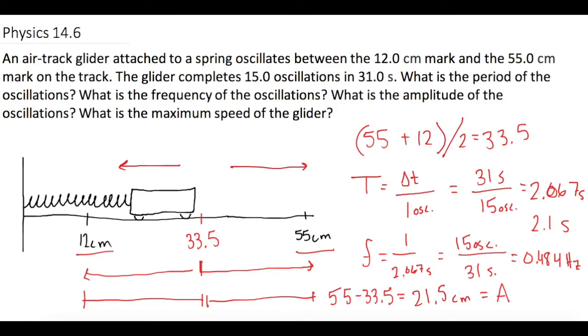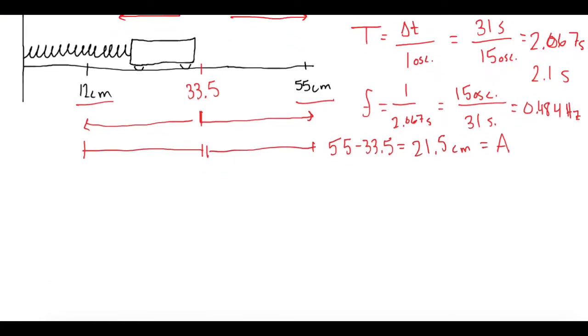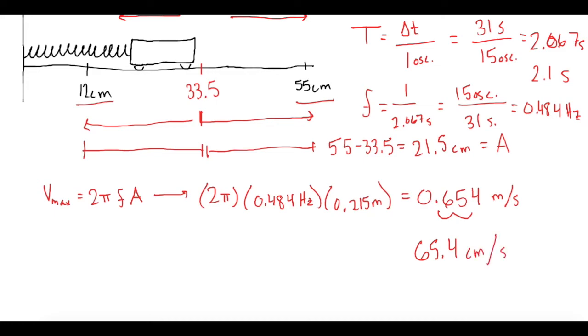Now they say, what is the maximum speed of the glider? To do that, we're going to use the equation Vmax equals 2 pi times the frequency times the amplitude. We've already solved for all of those. So now we have 2 pi times the frequency, which is 0.484 hertz. Now we multiply that by the amplitude, and we want that in meters, so instead of 21.5 centimeters we have 0.215 meters. That gives us a maximum speed of 0.654 meters per second. They want that in centimeters per second, so if we move the decimal place over 2, we get 65.4 centimeters per second is our Vmax.